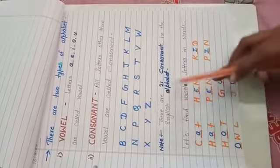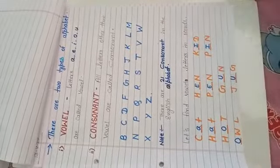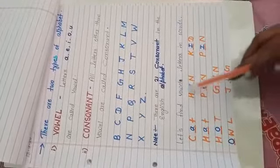There are 21 consonants in the English alphabet. Now let us find vowel letters in the words.